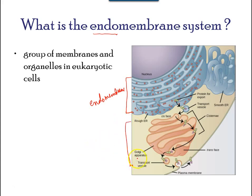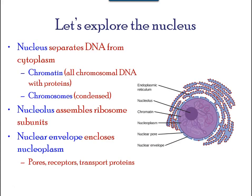The nuclear envelope is a double membrane structure that constitutes the outermost portion of the nucleus. Both the inner and outer membranes of the nuclear envelope are phospholipid bilayers. The nuclear envelope is punctured with pores that control the passage of ions, molecules, and RNA between the nucleoplasm and the cytoplasm.